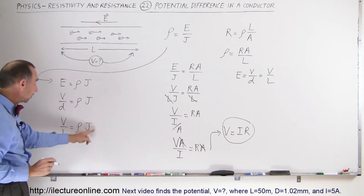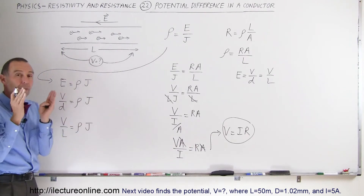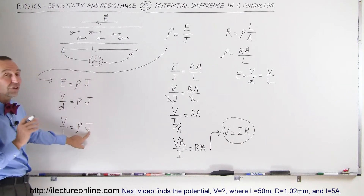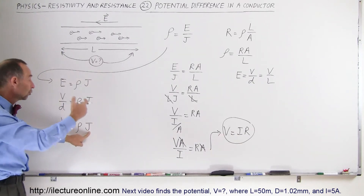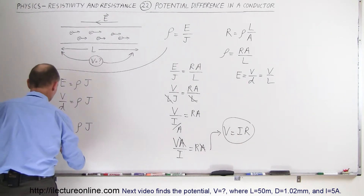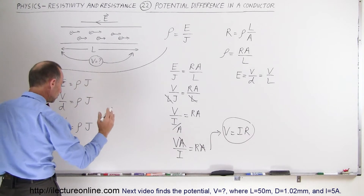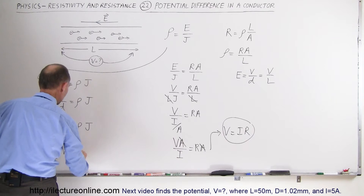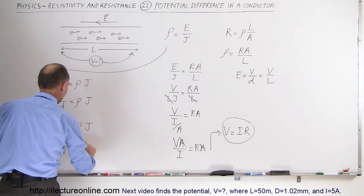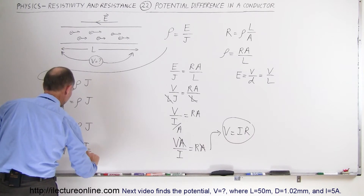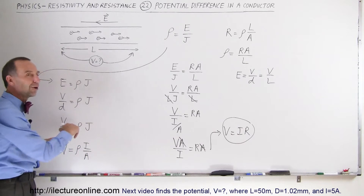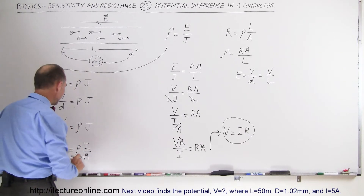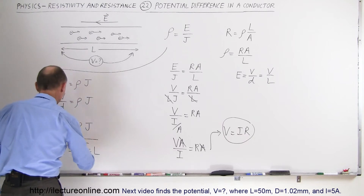This really gives us potential difference per unit length, so I can put L on the other side and write J, the current density, in terms of current over unit area. Finally, we can say that the potential difference between any two points on a conducting wire is equal to the resistivity times the current per cross-sectional area, and then L, the length of the wire, comes in as a multiplying factor.